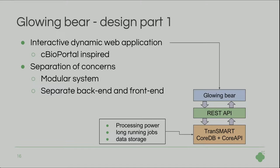Moving to design: the new UI is an interactive dynamic web application, inspired by cBio portal. One important thing is separation of concerns — the UI is independent from Transmart core and they communicate using the REST API. This creates a modular system with a separate backend and frontend, which is easier to maintain. Processing power, long-running jobs, and data storage are all provided by Transmart core via the DB core API, but this can be extended — other tools can all communicate via the REST API to one frontend.